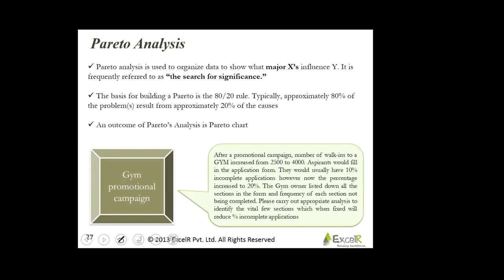Pareto analysis is used to organize data to show the major inputs influencing your output. It is frequently referred to as the search for significance — you try to identify the significant things. The basis for building a Pareto is the 80-20 rule: approximately 80% of the problems result from approximately 20% of the causes. The outcome of the Pareto analysis is your Pareto chart.